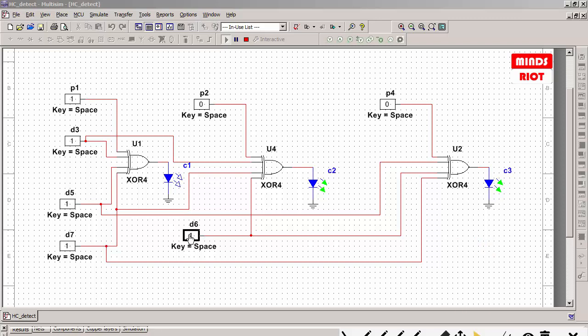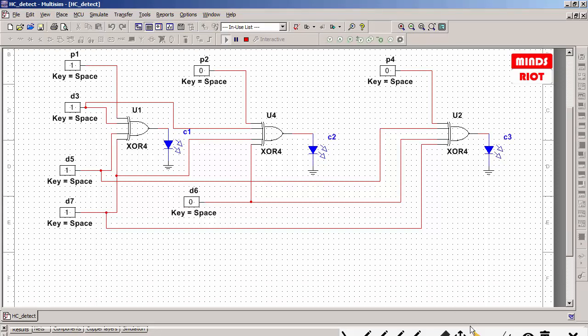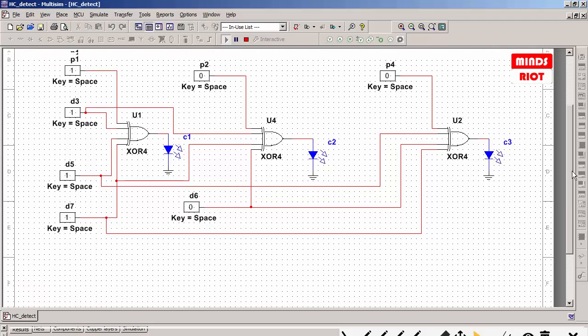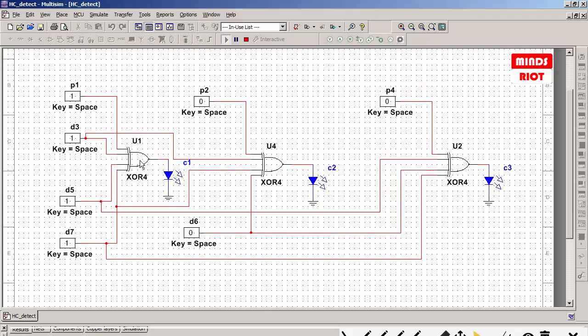If we change D6 from 1 to 0, we should get 0 as the code generated at the receiver side. As I said, if you get 0 at the receiver side it indicates there is no error. But as we received 110, we have error at the 6th position.